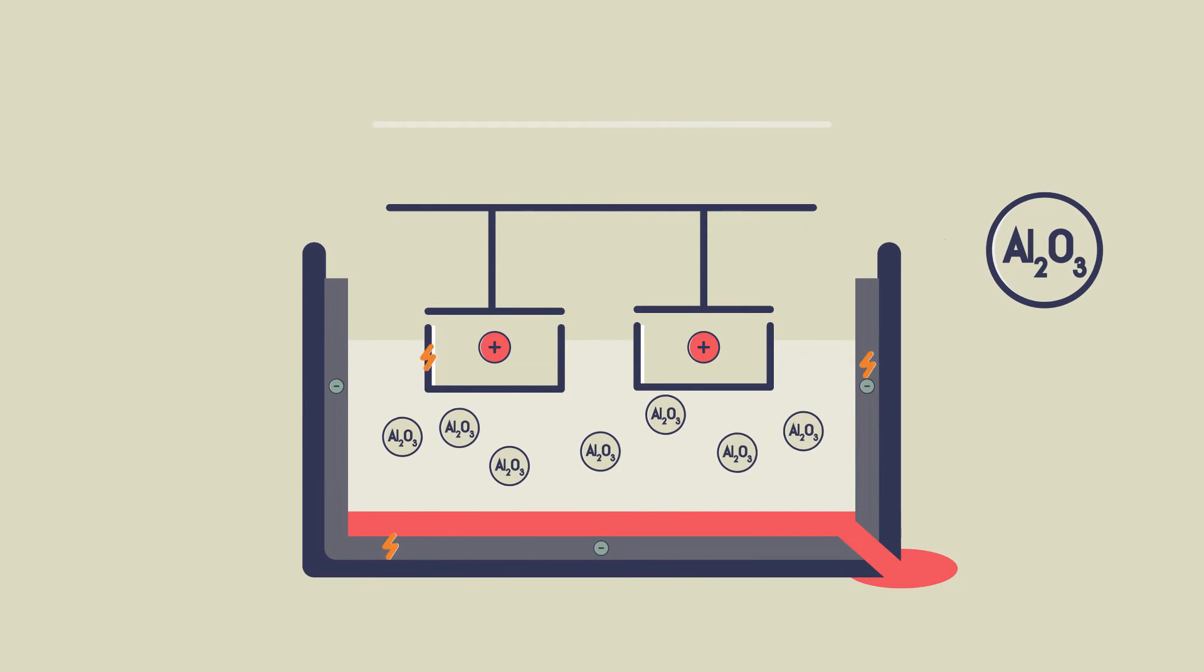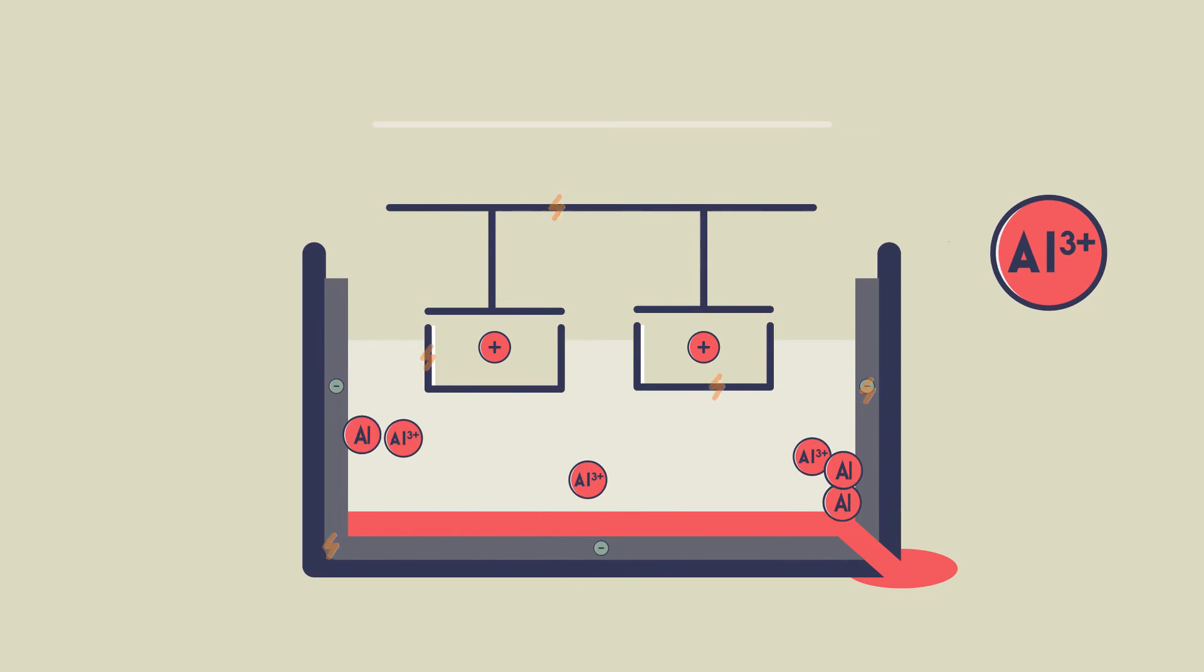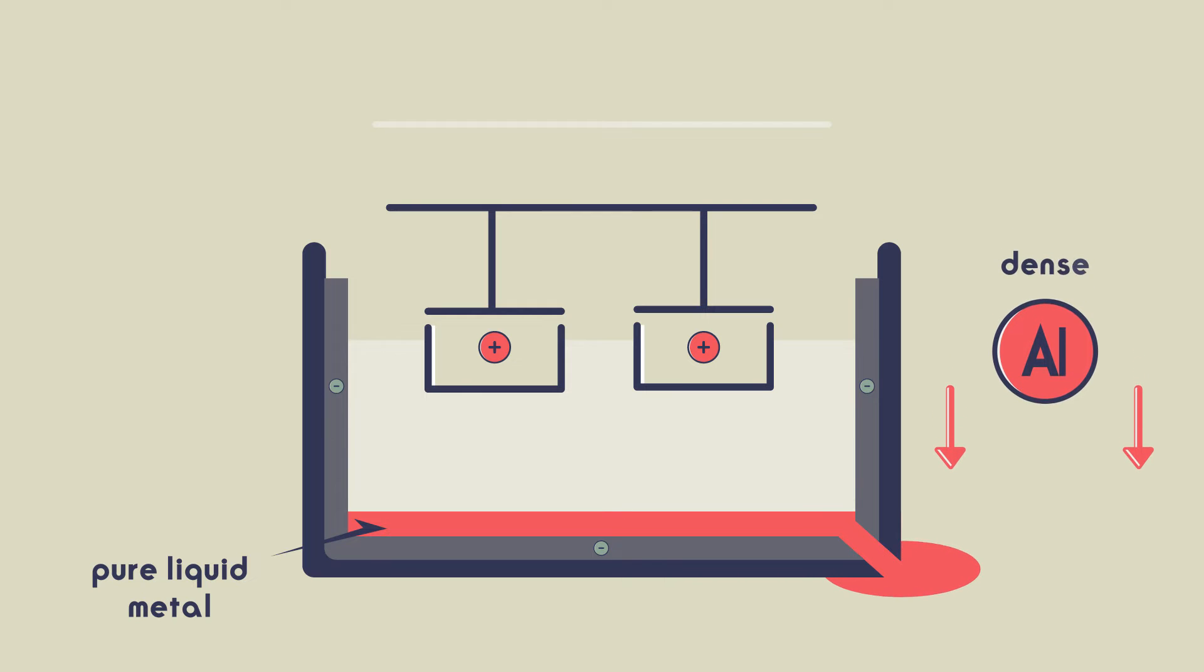When the battery is turned on and electricity flows, the aluminium from the aluminium oxide in the cryolite forms at the negative cathode and sinks to the bottom of the tank. Here, it can then be tapped off as a pure liquid metal. The aluminium sinks because it is more dense than the aluminium cryolite solution.